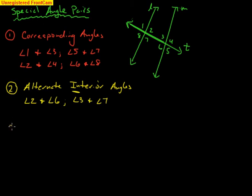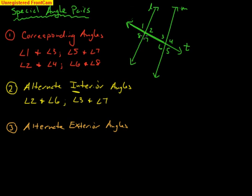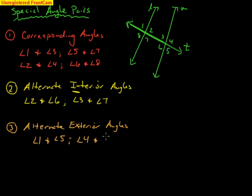Next, we look at alternate exterior angles. Alternate exterior angles are outside the two lines, but on opposite sides of the transversal. Angle one is outside L, and it pairs with angle five, which is also outside M — so angles one and five are alternate exterior angles. Angle four and angle eight are also alternate exterior angles — on opposite sides of the transversal, outside those lines.